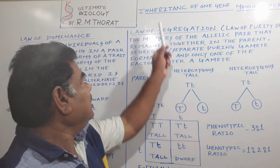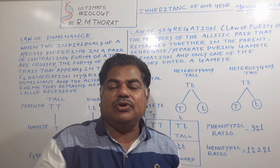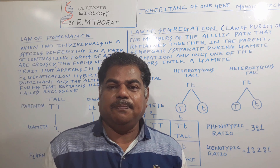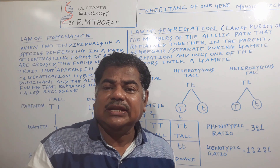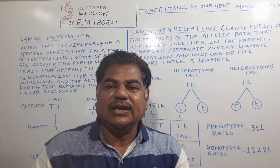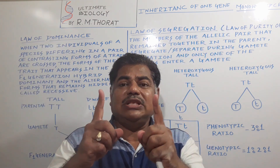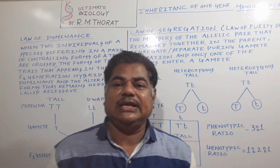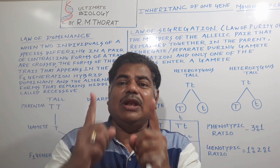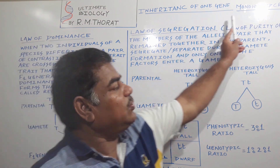Inheritance of one gene. Inheritance means the transfer of genetic characters from one generation to another generation. According to Mendel, these characters get transferred by factors. Today, those factors we call genes. Mendel considered seven pairs of contrasting characters, and out of those, he considered only one pair of genes — that is a monohybrid cross.